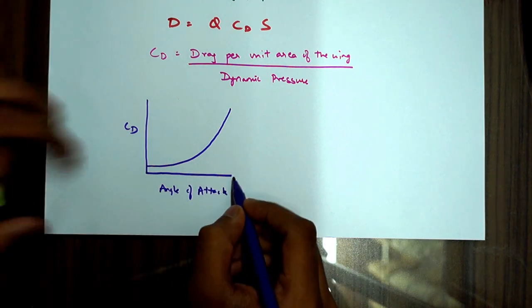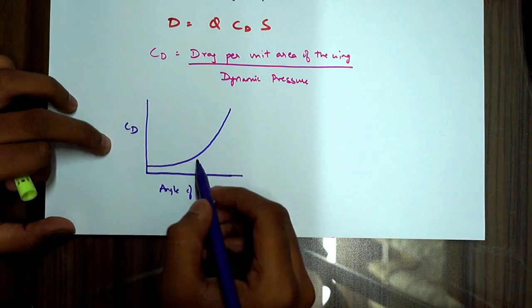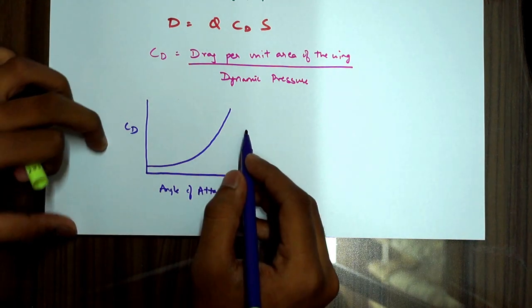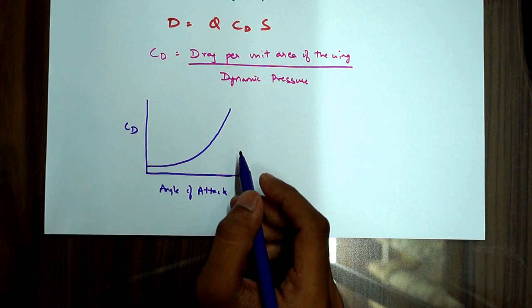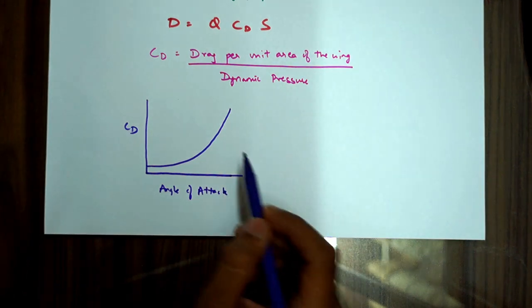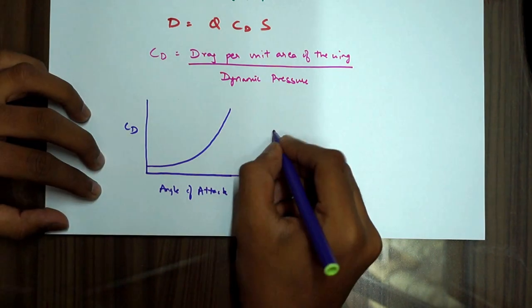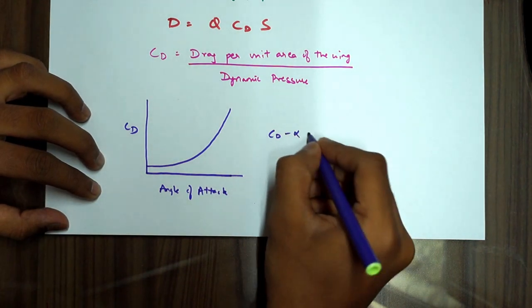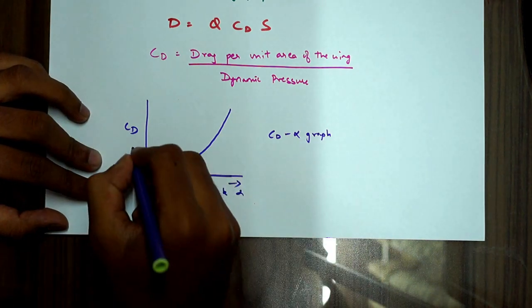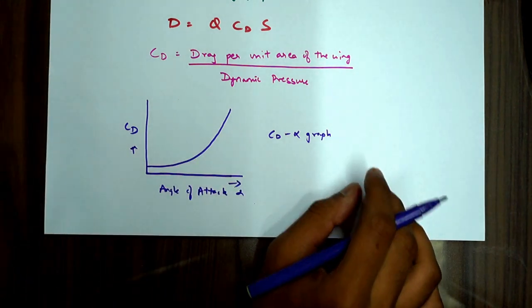But at higher angle of attack, the drag, coefficient of drag, increases rapidly. And further beyond the 16 degree angle, the drag increases further exponentially. Alright, so this is the CD by alpha graph, where alpha is your angle of attack. So I hope this is clear.